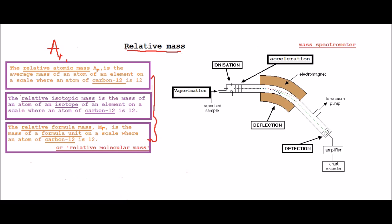The next definition is the relative isotopic mass, and this is the mass of an atom of an isotope of an element on a scale where an atom of carbon-12 is 12.